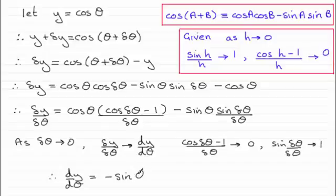And that's differentiating cosine theta from first principles, giving us dy by d theta is minus sine theta. So I hope you're able to understand that. And thanks for watching.